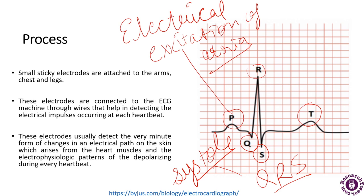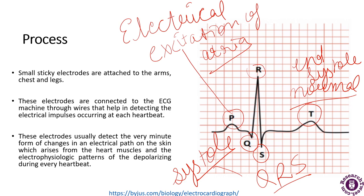The T wave represents the return of the ventricles to the normal stage, marking the end of systole. By counting the number of QRS complexes, we can evaluate the heartbeat of the patient. Any deviation in this shape results in heart diseases or an abnormal heart rhythm, which can either be slow, irregular, or very fast heartbeats. ECG is therefore a very essential equipment in the field of medicine.